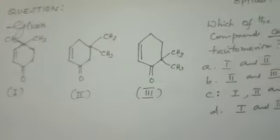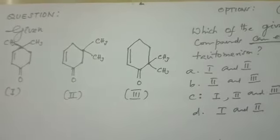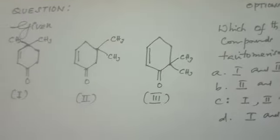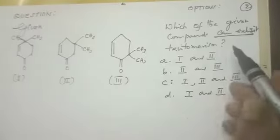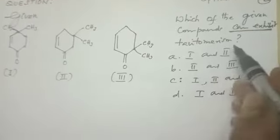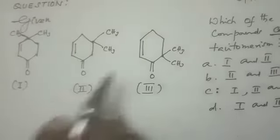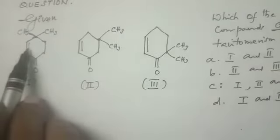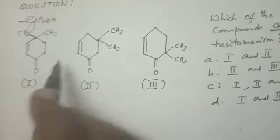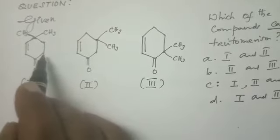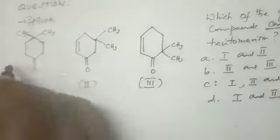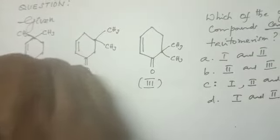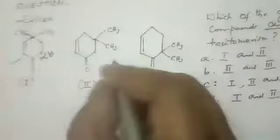Now let us go to the next question based on Tautomerism. Tautomerism topic is very important and very easy. The question: which of the given compounds can exist in tautomeric form? Each one let us see. The first compound has a keto group — on both sides you are watching 1, 2, 3 — here you are having alpha hydrogen sufficiently. So it is answering. The second compound also has alpha hydrogen, so it is answering Tautomerism.